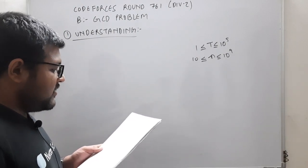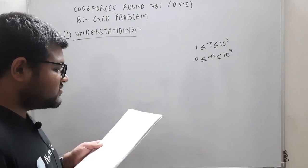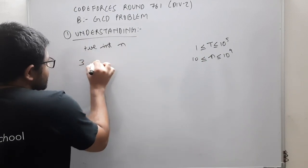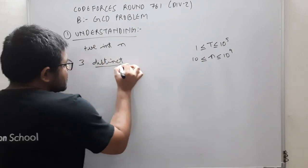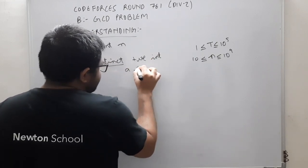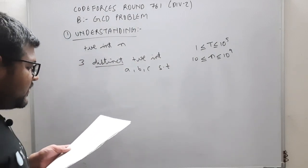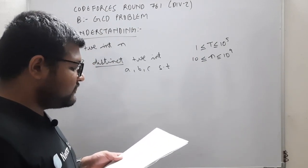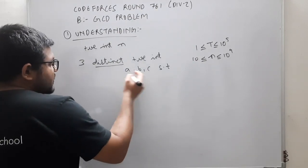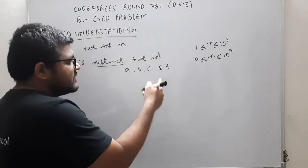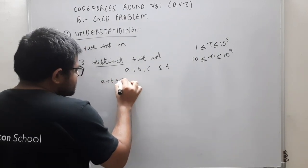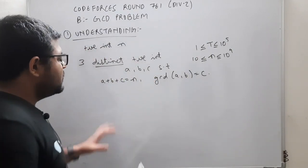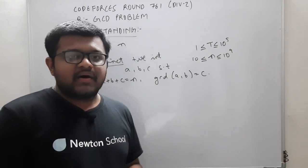Given a positive integer n, find three distinct positive integers a, b, and c — and the word 'distinct' is important — such that a plus b plus c is equal to n, and GCD of a and b is equal to c, where GCD of x, y denotes the greatest common divisor of x and y. So we are given n and we need to find three distinct positive integers a, b, c such that their sum equals n and GCD(a, b) equals c.